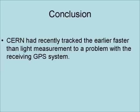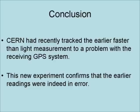CERN had recently tracked the earlier faster-than-light measurements to a problem with the receiving GPS system. This new experiment confirms that the earlier readings were indeed an error.